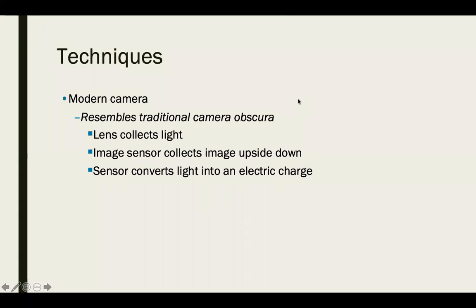Some modern techniques: the modern camera resembles the traditional camera obscura. The lens collects light, the image sensor collects the image upside down, and the sensor converts the light into an electric charge. It still leans on those same key principles from almost 200 years ago, but it has developed a lot — we have electricity and all of these things that make it much quicker and easier.